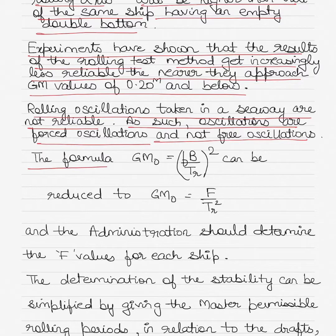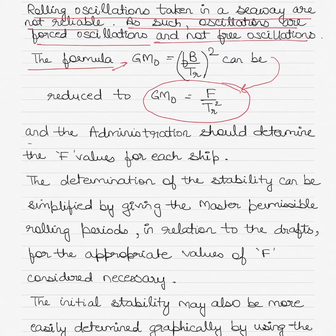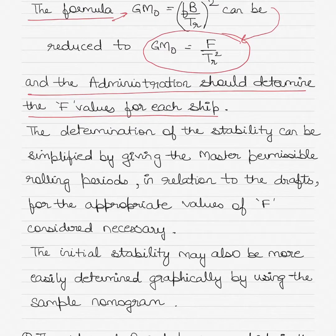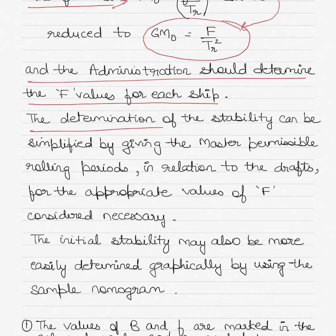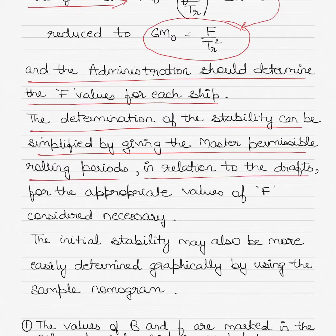Therefore the formula GM0 equals F times B by TR whole square can be modified to GM0 equals F by TR square and the administration should determine the F values for each ship, that is the rolling period coefficient. The determination of the stability can be simplified by giving the master permissible rolling periods in relation to the drafts for the appropriate values of F considered necessary.